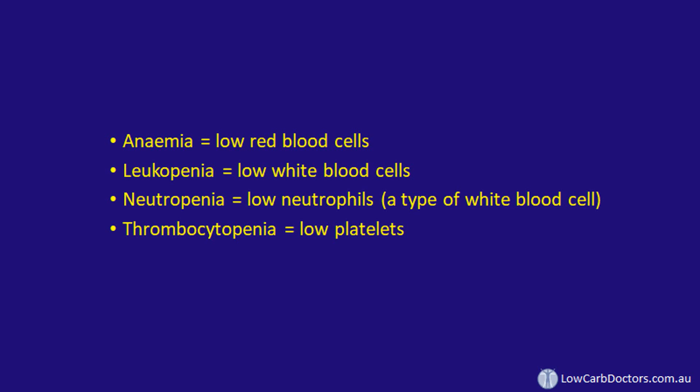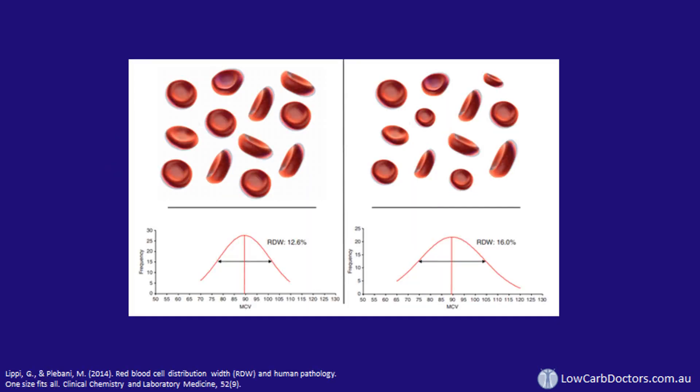As with iron deficiency anemia, we can have an increase in the red cell distribution width, though it's usually not quite as profound. The most common causes, but by no means not the only ones, are B12 or folate deficiency, high alcohol, the oral contraceptive pill, or hypothyroidism. And they're quite common in our population.